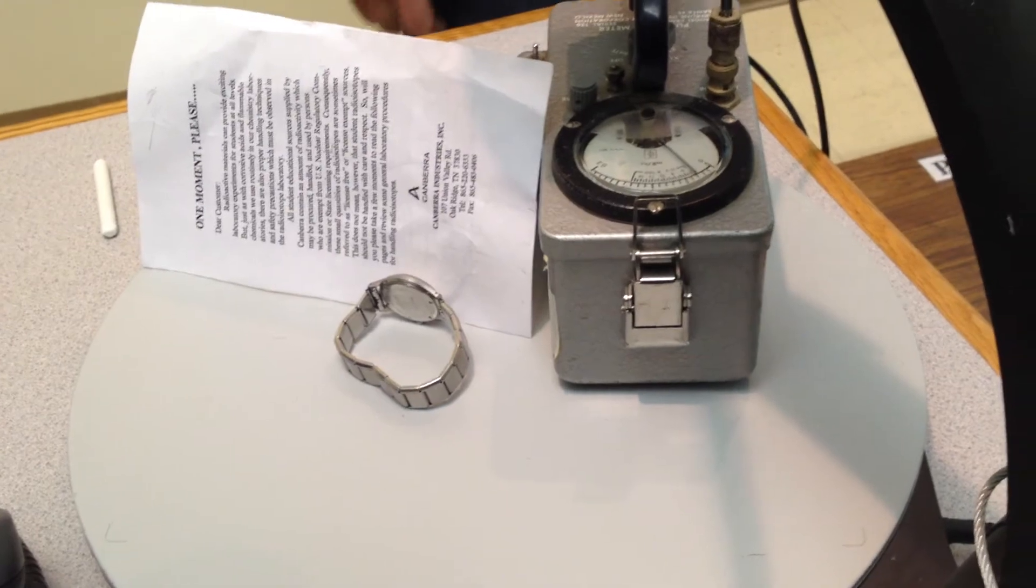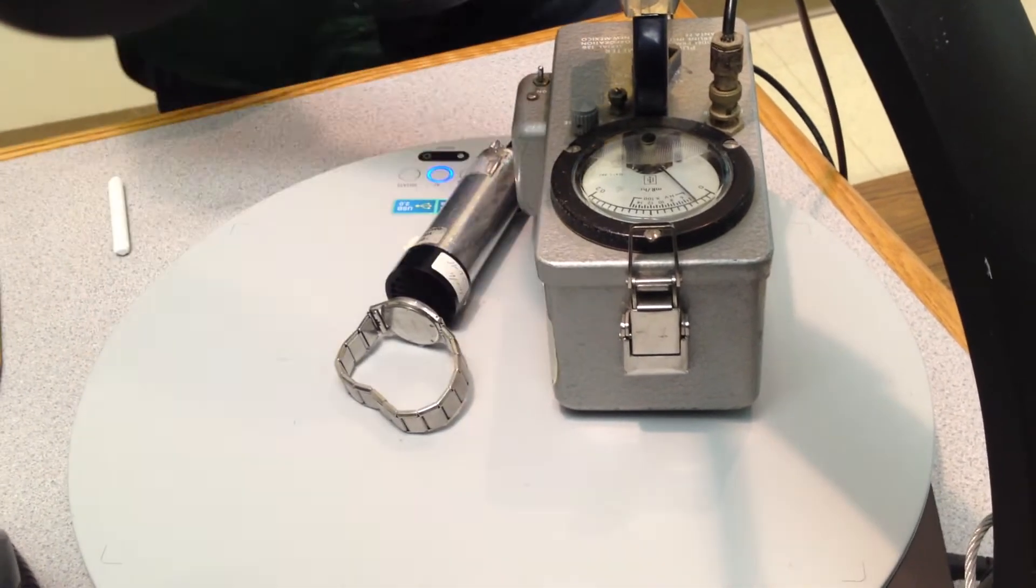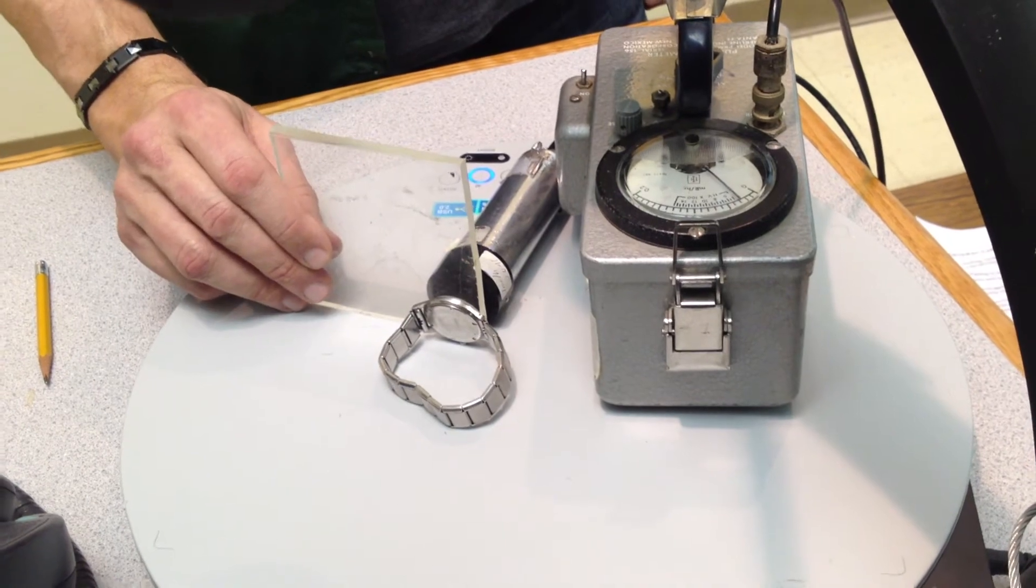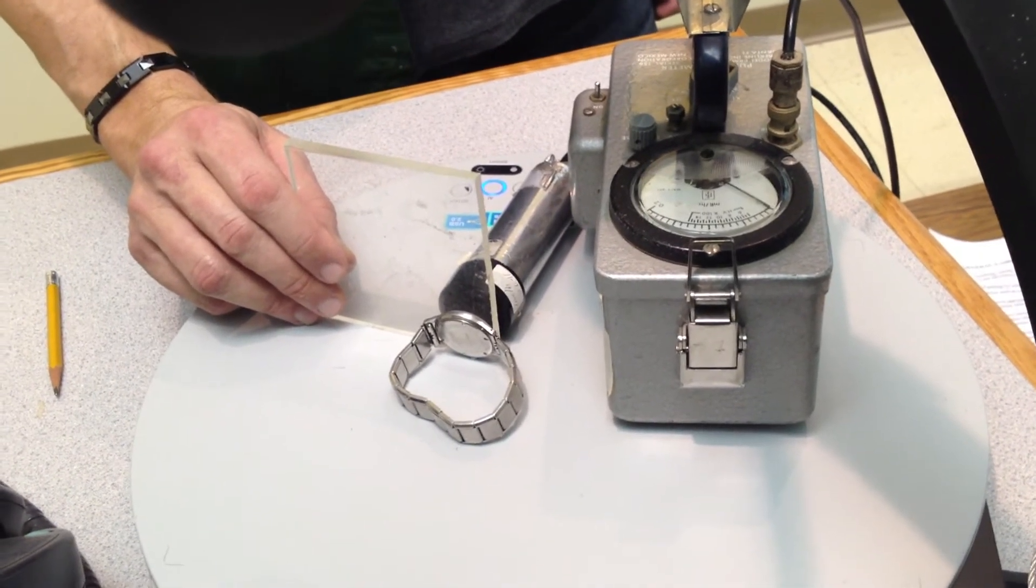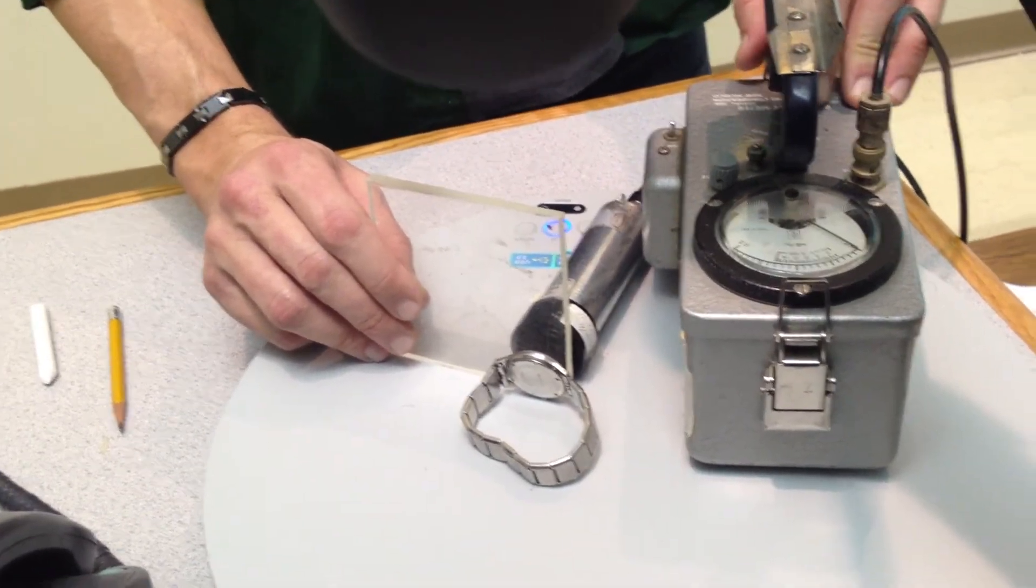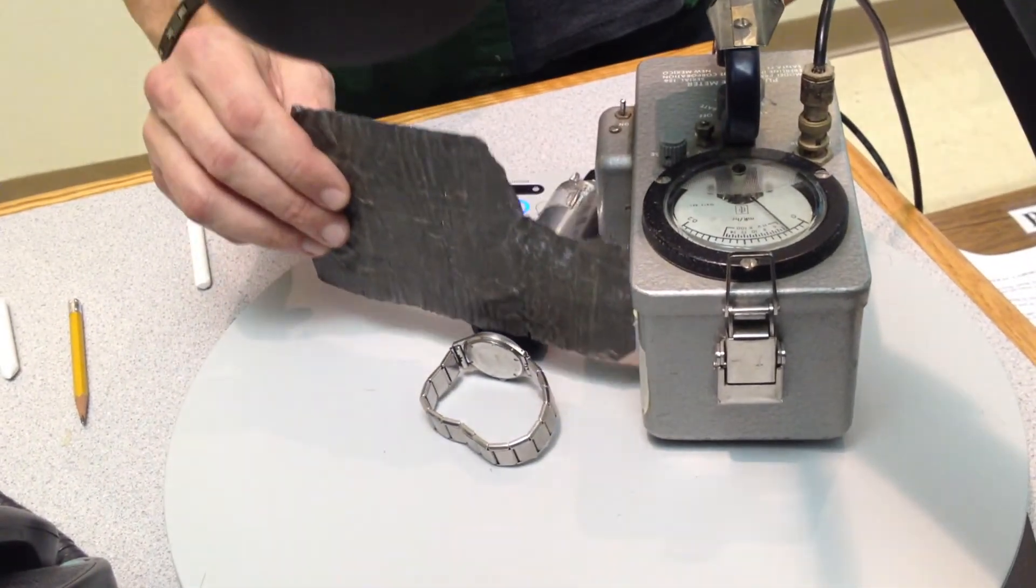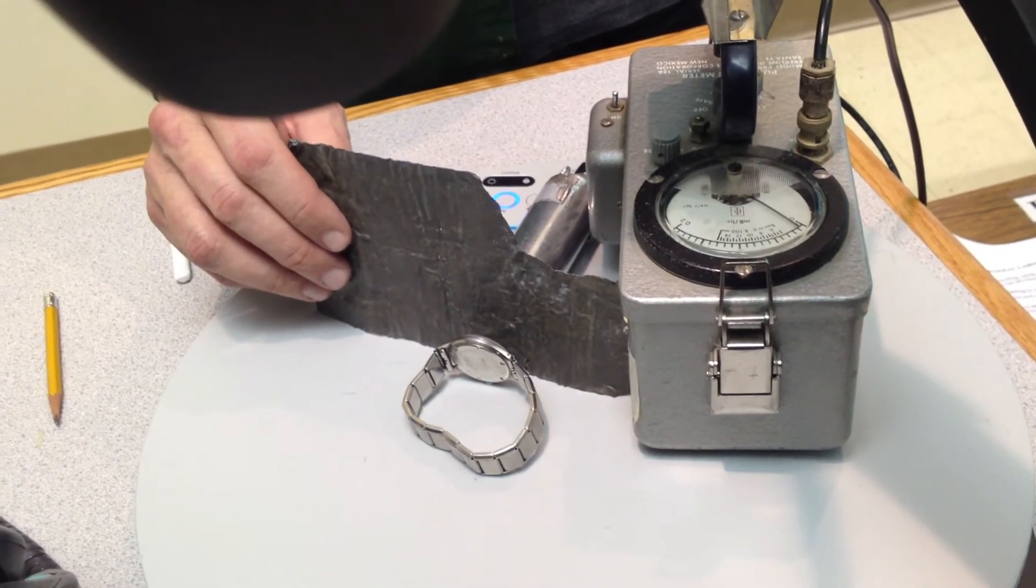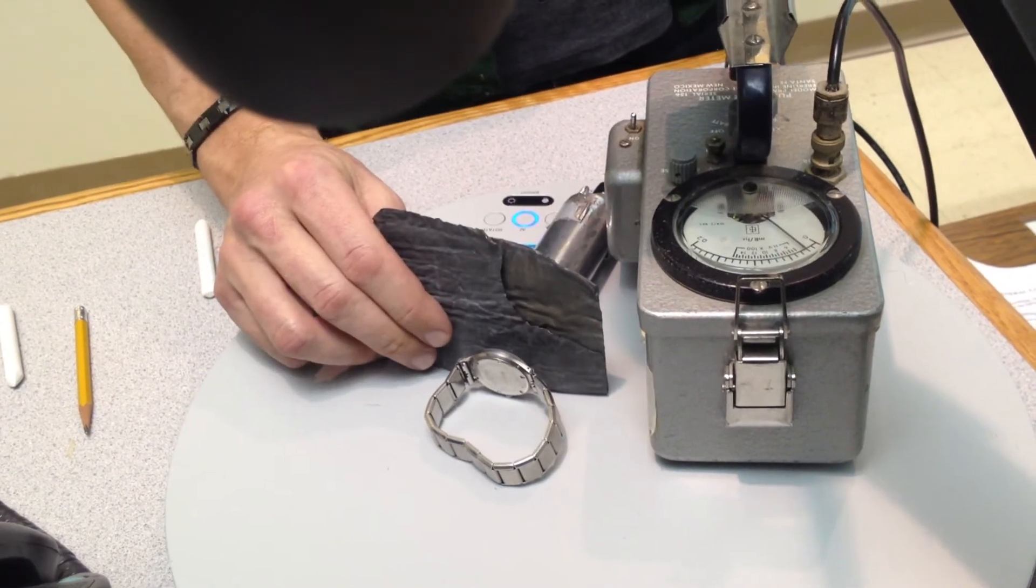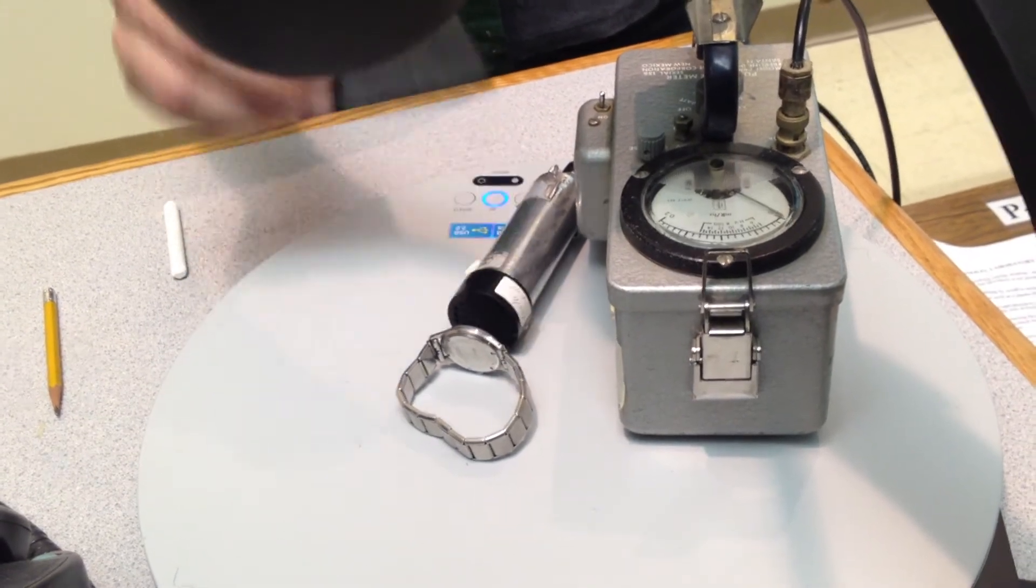The Geiger-Mueller detector doesn't know what kind of particles they are, it just knows that there are some. So two sheets of paper - what do we know it isn't? Don't say it, think it. Okay, so the plastic is doing some good but not really blocking all the way. A couple of sheets of lead now finally doing a reasonable job on it.